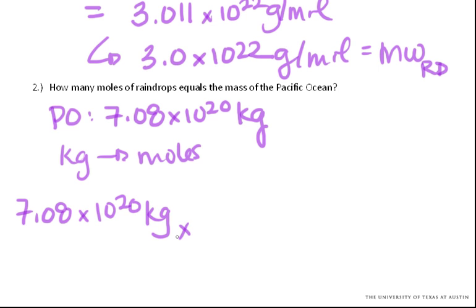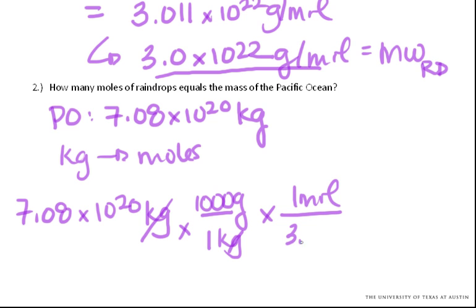Kilograms. Convert kilograms to grams. One kilogram is a thousand grams. Kilograms cancel. And so now we need to go from grams to moles. This is where we use our molecular weight that we previously found. And one mole has 3.0 times 10 to the 22 grams. Grams cancel.